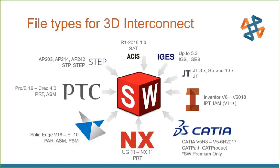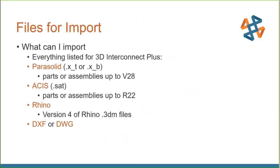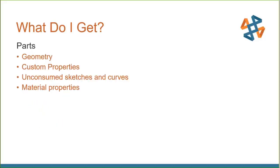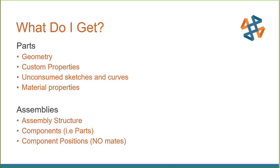For importing, you can additionally bring in Parasolid, ACIS, Rhino, and DXF/DWG. When using 3D Interconnect you can also get custom properties, unconsumed sketches and curves, and material properties. For assemblies, you get the assembly structure, the component parts, and their positions — but no mates. Those mates don't come along for the ride; you have to apply them in SOLIDWORKS once you have the assembly over.